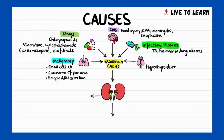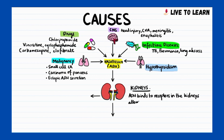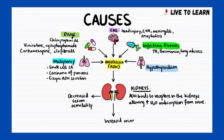Hypothyroidism induces hyponatremia either by inappropriate release of ADH or by a decrease in GFR. All these causes lead to excessive ADH release, which binds to receptors in the kidneys and increases water reabsorption from the urine, resulting in decreased serum osmolality and increased urine osmolality.